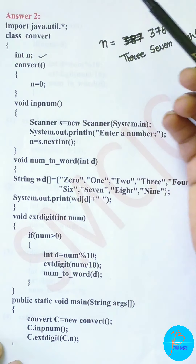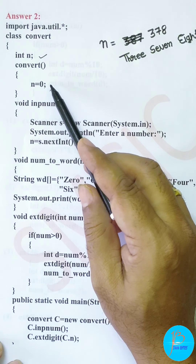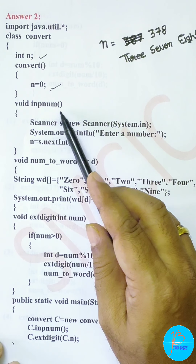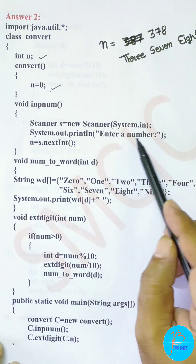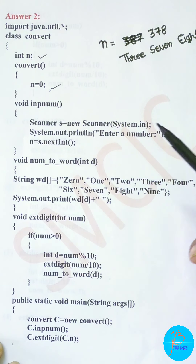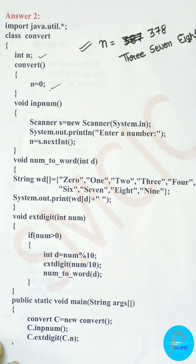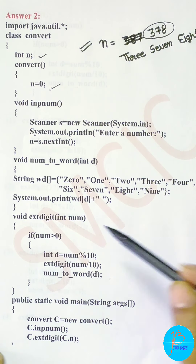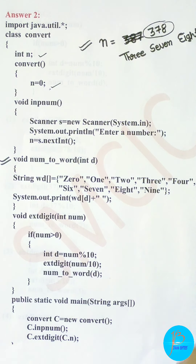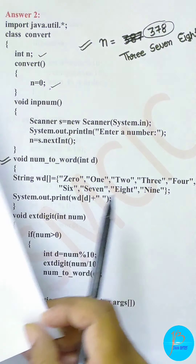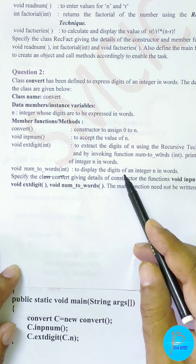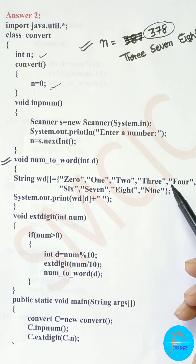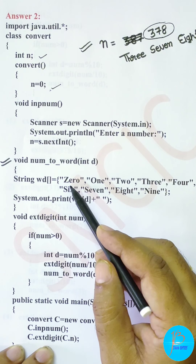A class Convert is given. The data member 'n' is assigned. The first method is the constructor which is a default constructor, so we initialize n with zero. The next method is inputNum which takes the entry of n - new Scanner, enter a number, n = s.nextInt(). So first you input a number n, for example 378, stored into n. Then look at the last method numToWord which displays the digit of an integer in words.